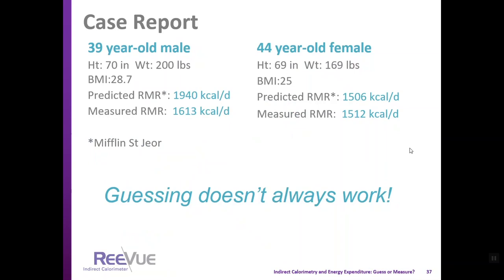Although his metabolic rate decreased, he came more within the normal range predicted by the Mifflin St. George equation. Two more cases: a 39-year-old male, 70 inches, 200 pounds — predicted 1,940 kcal/day but measured 1,613. A 44-year-old female, 69 inches, 169 pounds, BMI 25 — predicted 1,506 and measured 1,512 calories per day. Each of these four individuals had varied metabolic rates, and the only way to be accurate is to measure. Prediction was accurate for only one in four.